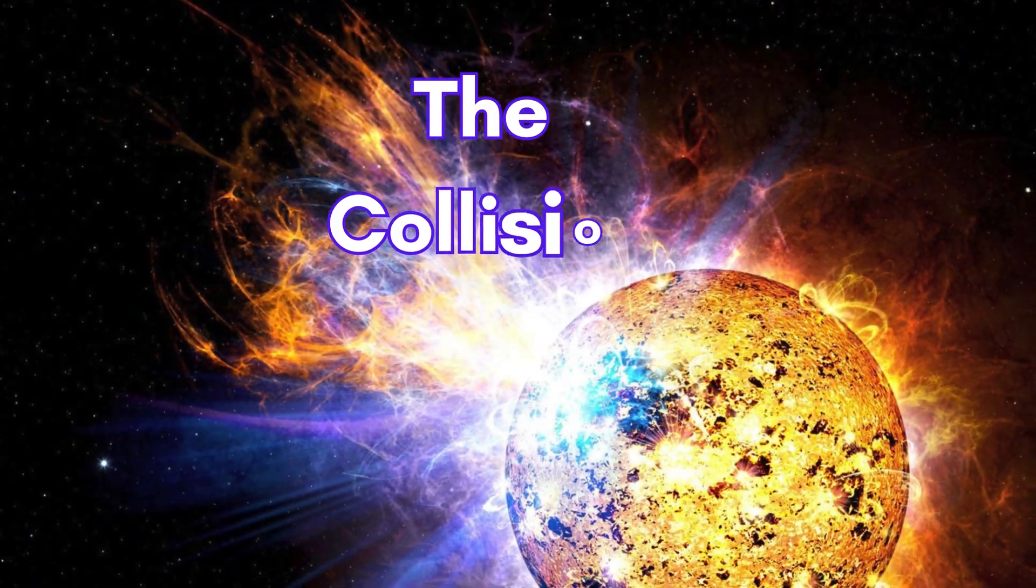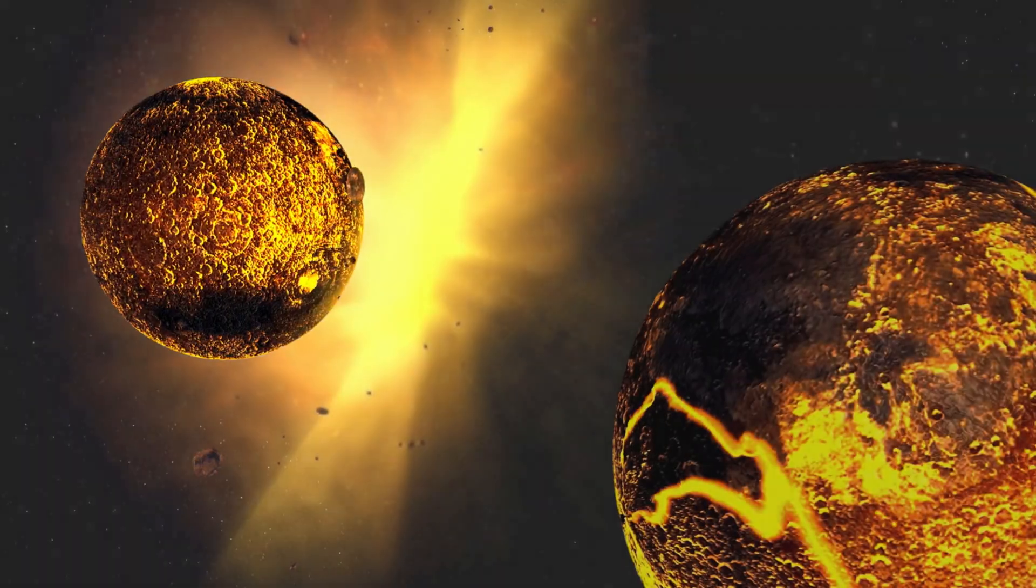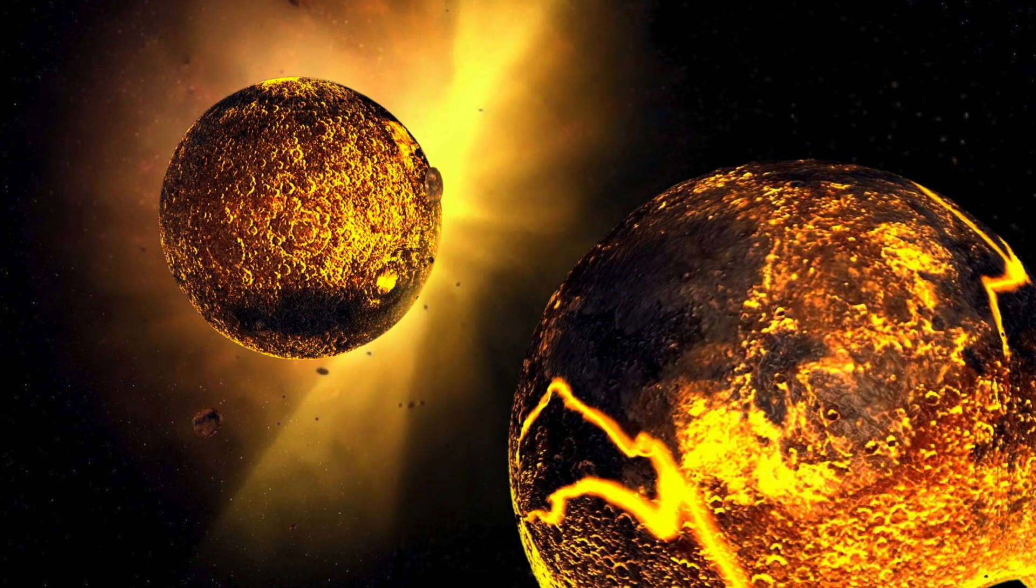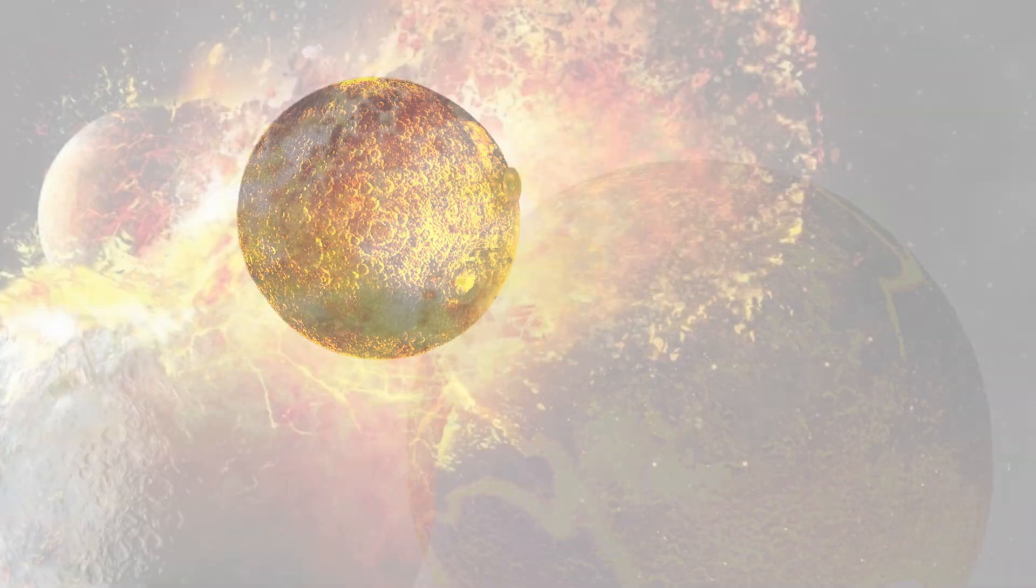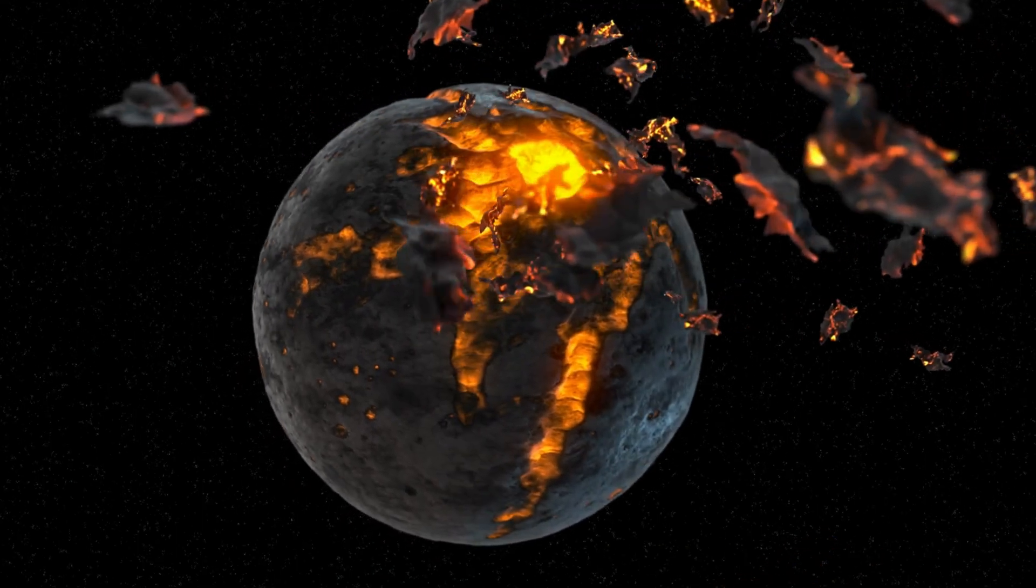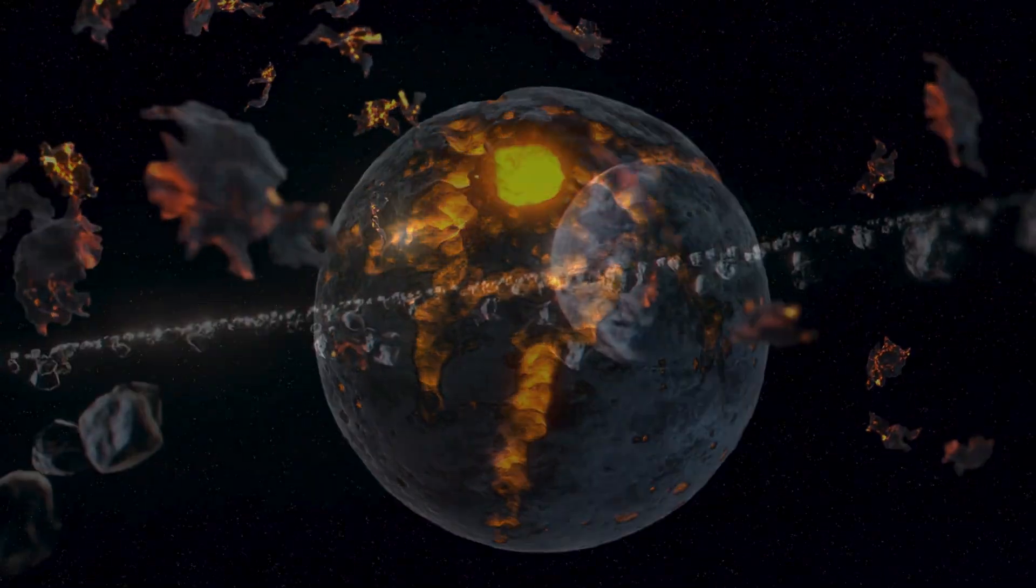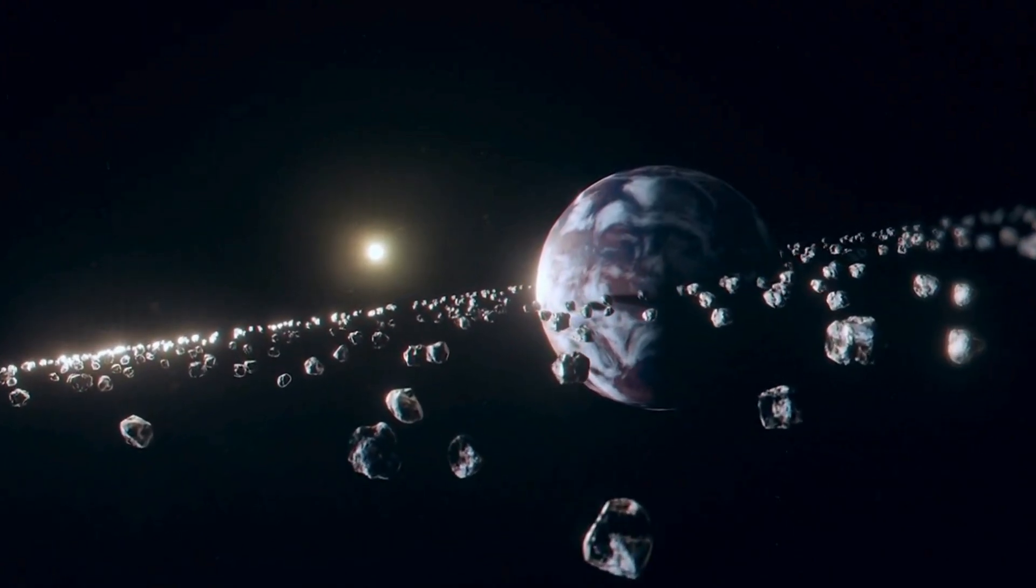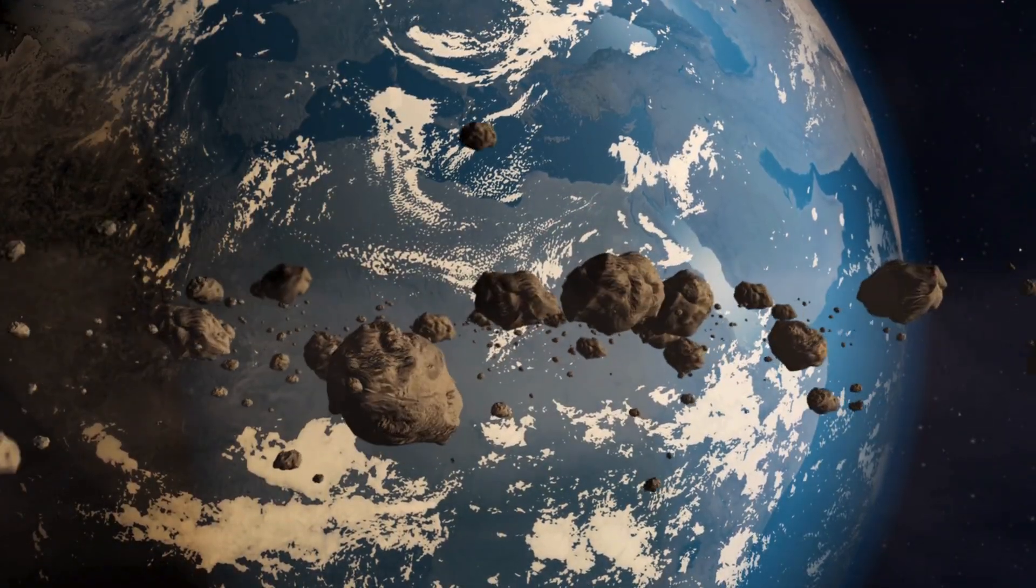The collision. Chaos in space. When Theia hit Earth, all hell broke loose. The impact was so powerful that it vaporized both planets' outer layers. Molten rock, metal, and gas were flung out into space like confetti at a New Year's Eve party. Some of the material stayed in orbit around Earth, while the rest either fell back down or drifted off into deep space.